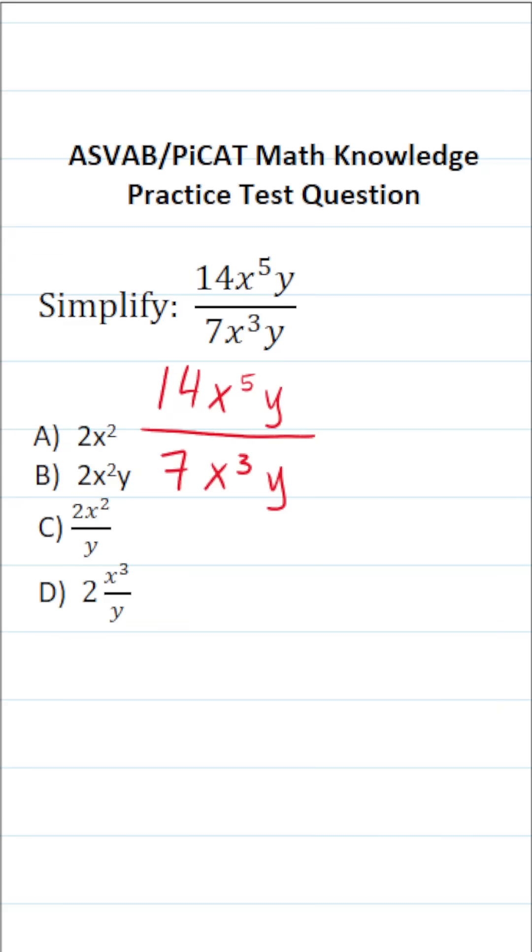Now, in order to simplify this expression, let's take it part by part. First, let's do 14 divided by 7. 14 divided by 7 is 2.